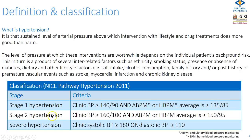Stage 2 hypertension is where the clinic blood pressure is more than 160 over 100 and the average on either ambulatory blood pressure monitoring or home blood pressure monitoring is more than 150 over 95. Severe hypertension is described as a clinic blood pressure with a systolic over 180 or a diastolic over 110.